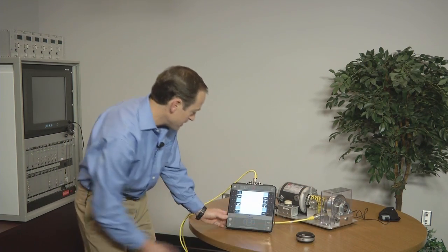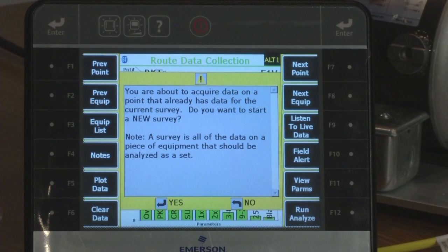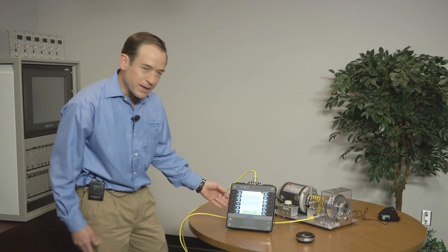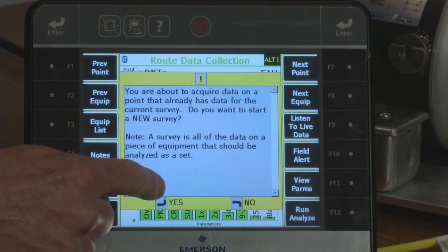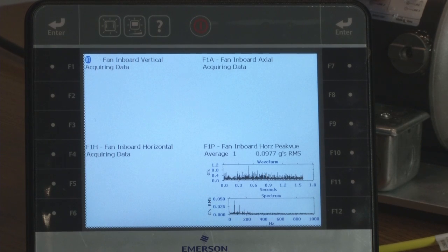The second thing is let me go ahead and I am going to collect my data. I will hit my acquire data. And the analyzer is set up to collect all data, so it is asking me do I want to save this data. And yes I want to go ahead and save this data. It is acquiring the data with the fault.